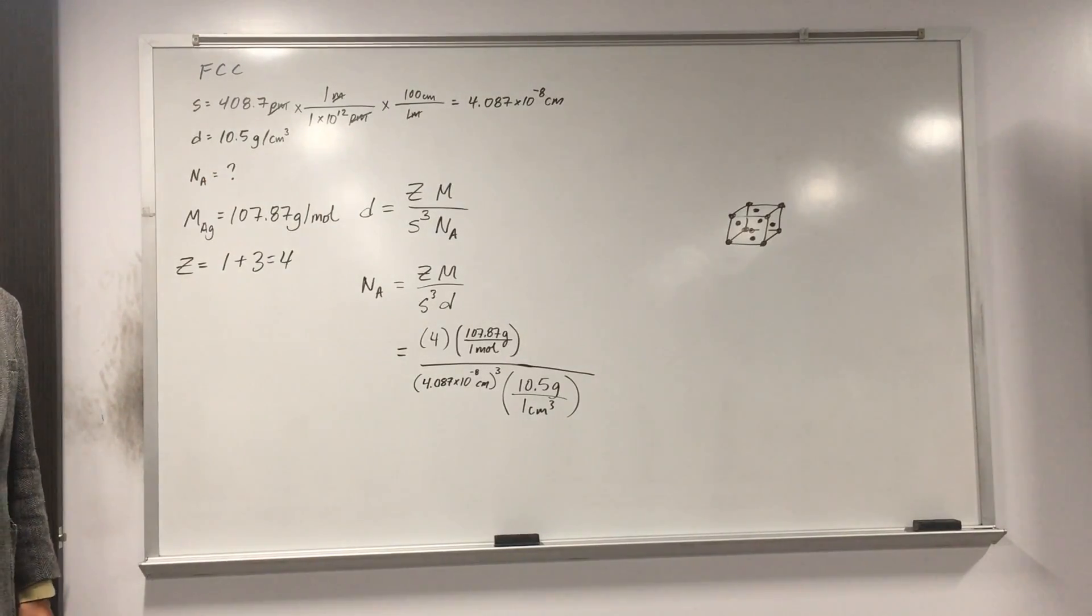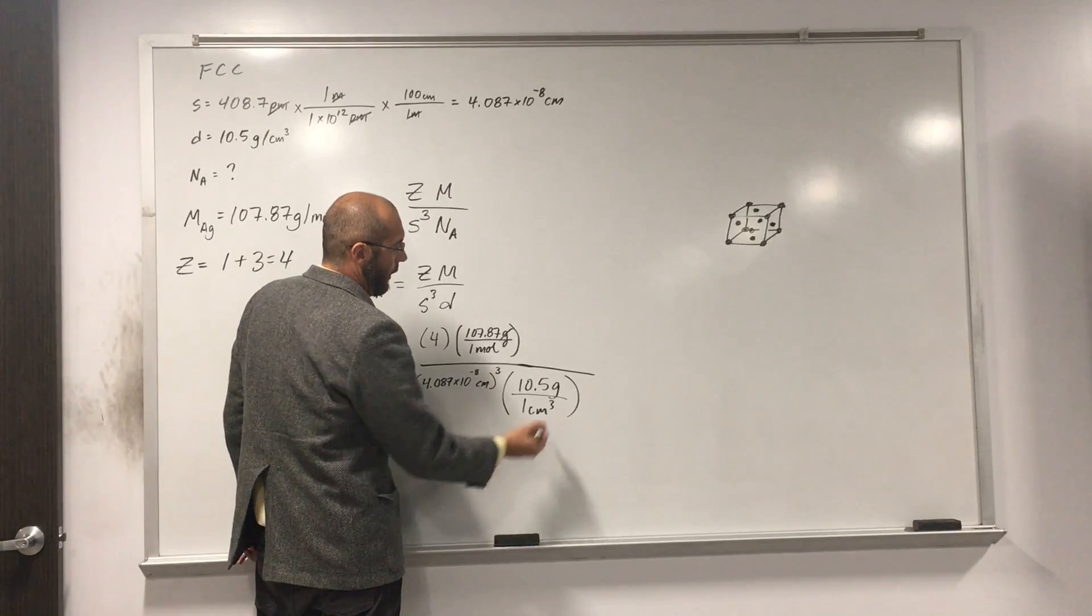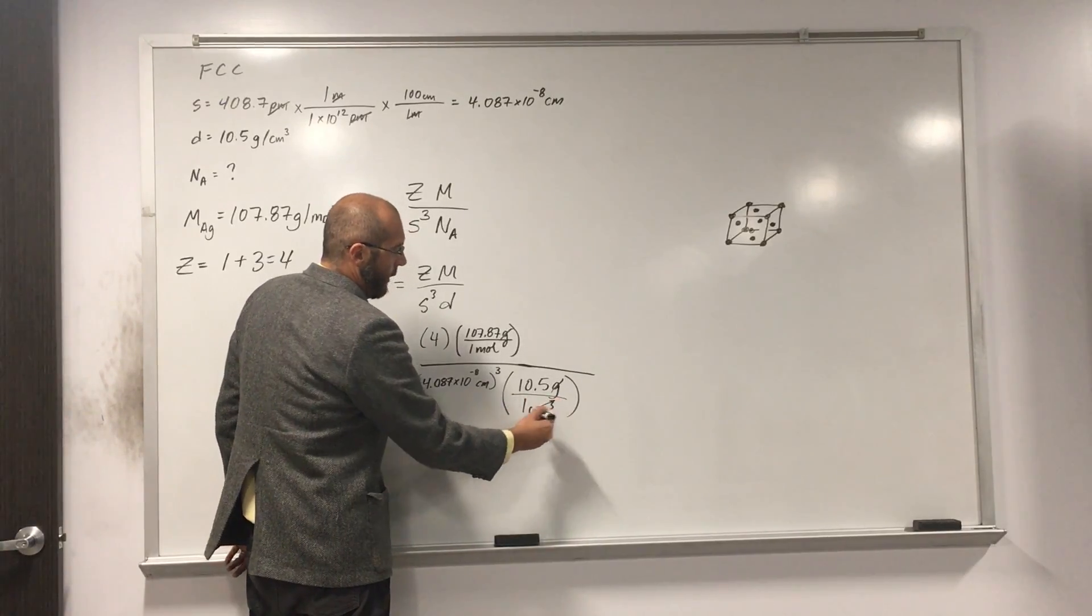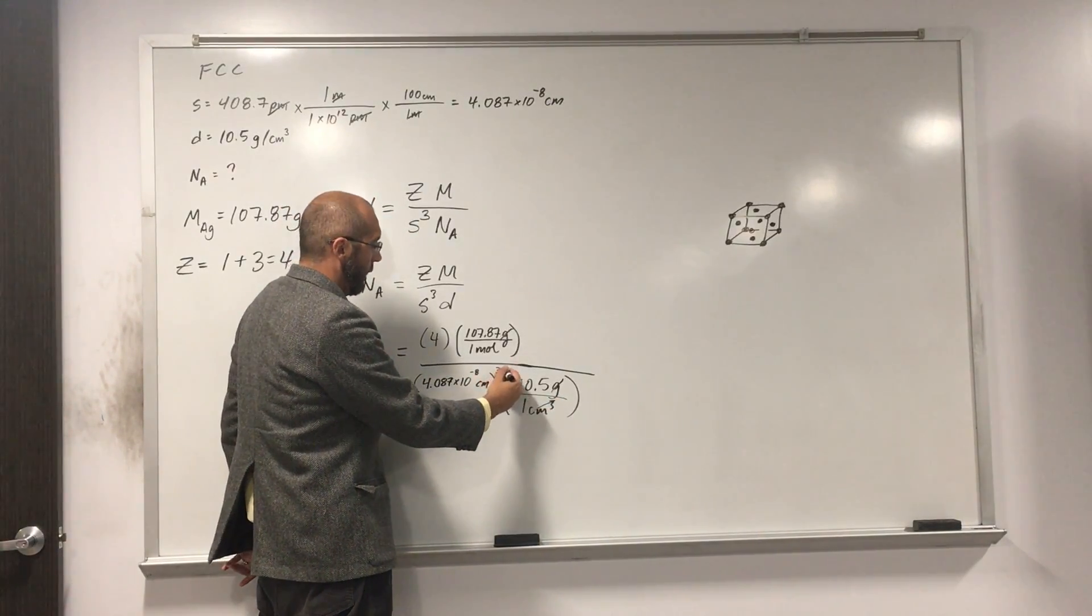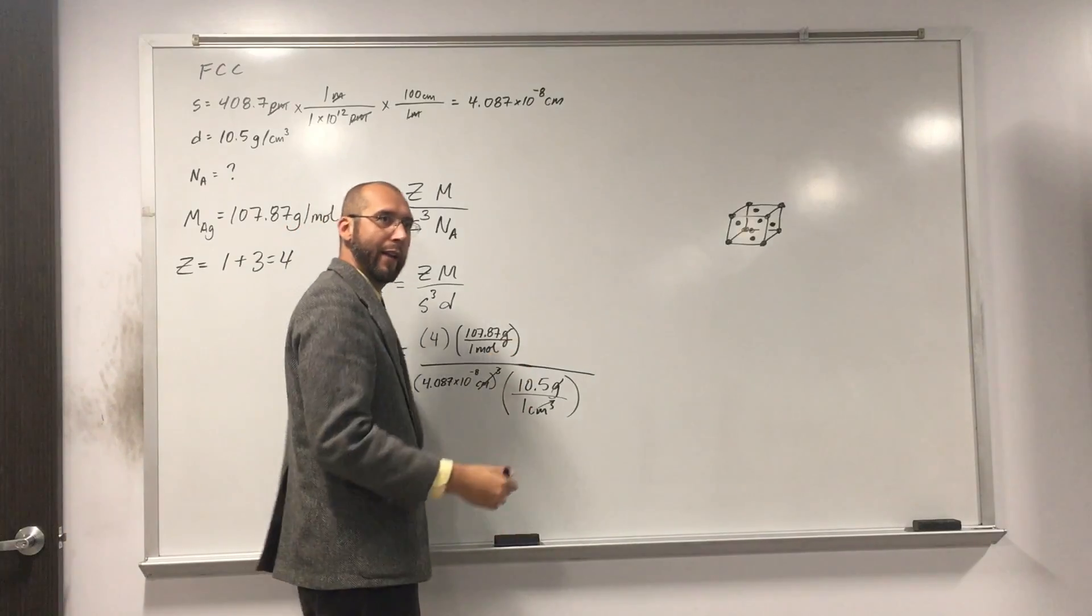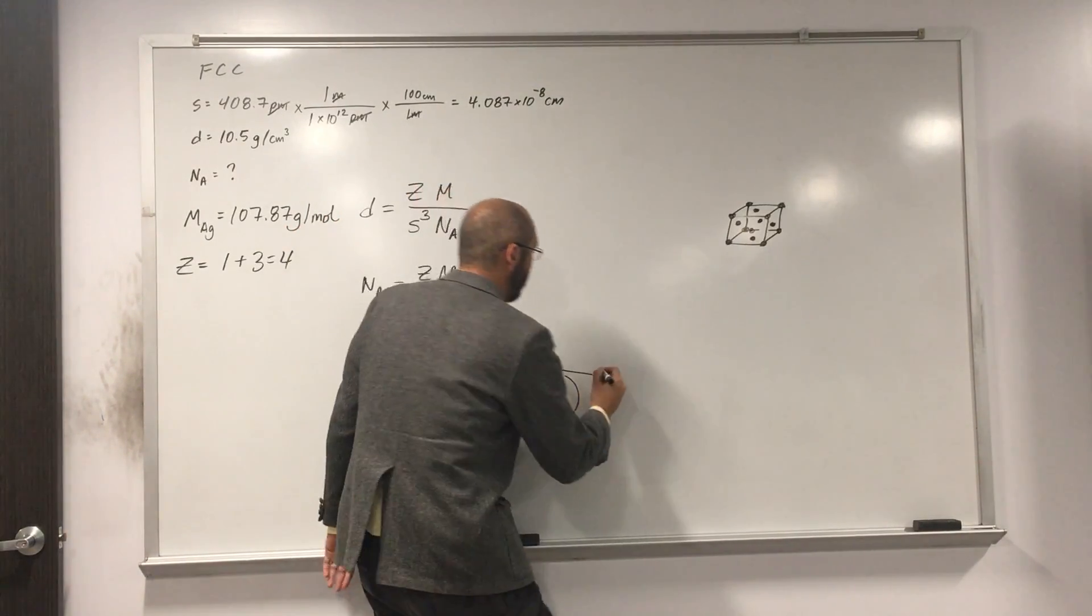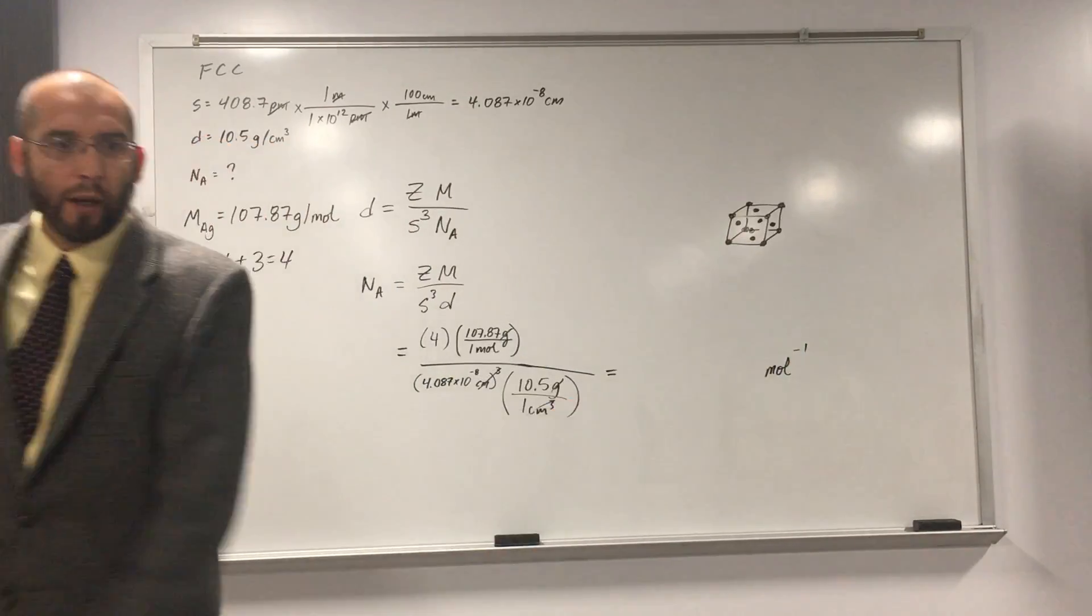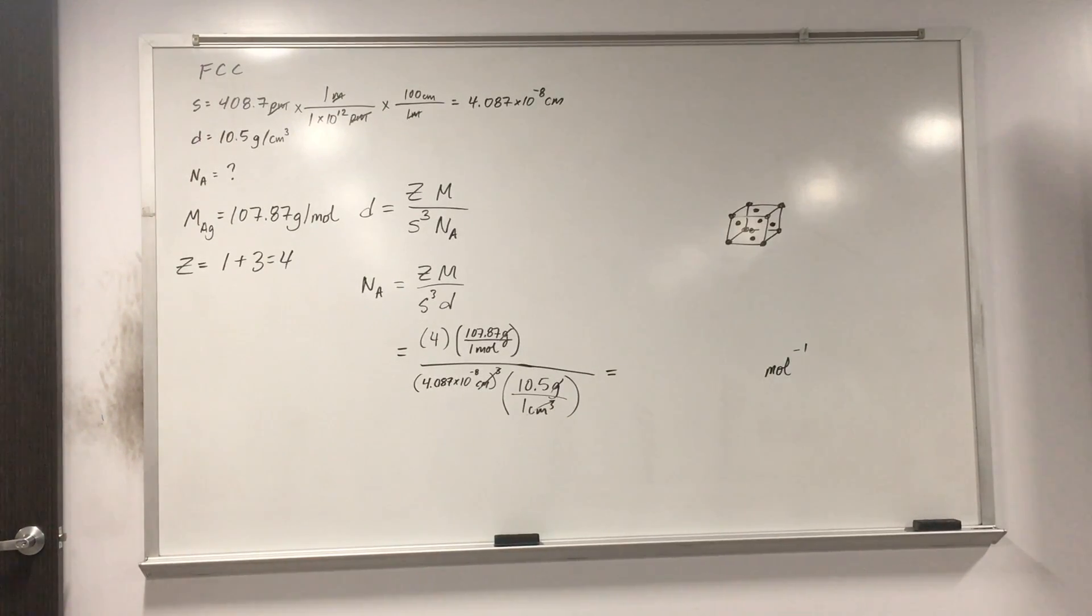And so hopefully we've got some cubic centimeters somewhere that we can cancel with it. And we do in the density. So that's 10.5 grams per one cubic centimeter. So hopefully you see grams in the numerator. It's going to cancel with grams in the denominator there. And then cubic centimeters, when we eventually cube this, is going to cancel with cubic centimeters there. And then the units that we're going to get is per mole. And that's the units of Avogadro's number. Is everybody okay with what we have done?